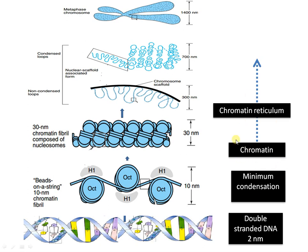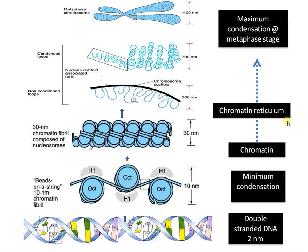This is further condensed and we call it by different names at different levels of condensation. We call it chromatin or chromatin reticulum during prophase or interphase stages, where it appears as a thread-like structure. We call it a chromosome when there is maximum condensation, which often occurs at the metaphase stage of cell division — either meiosis or mitosis. The metaphase chromosome is often used for diagrammatic representation in ideograms, karyotypes, etc.